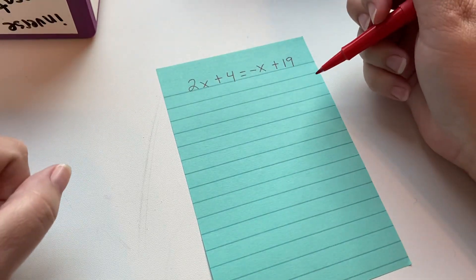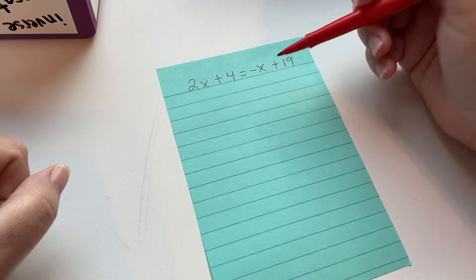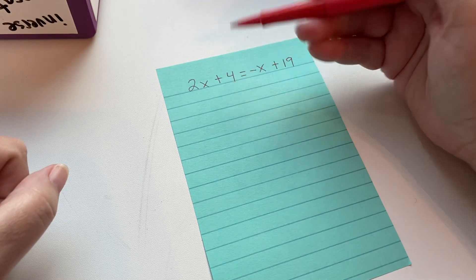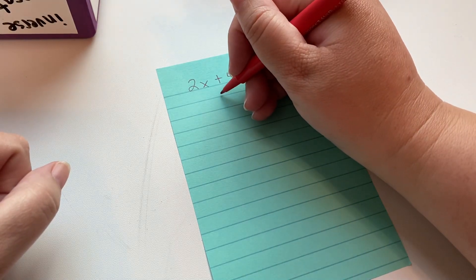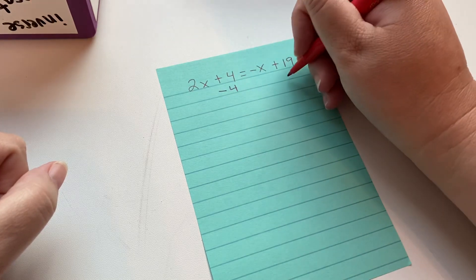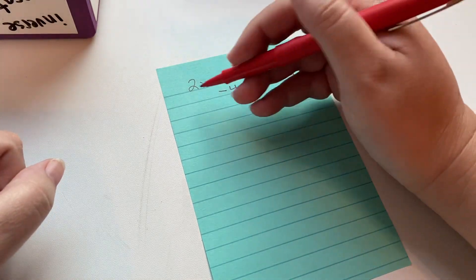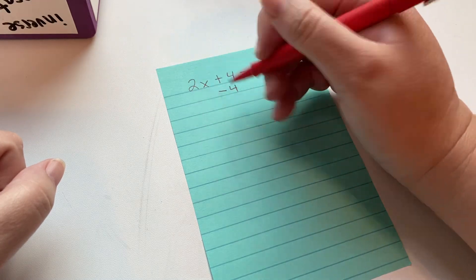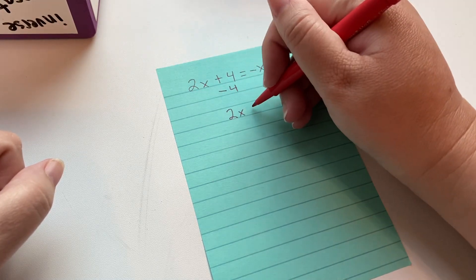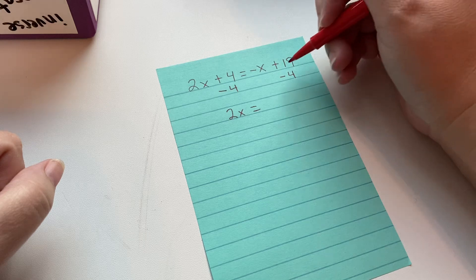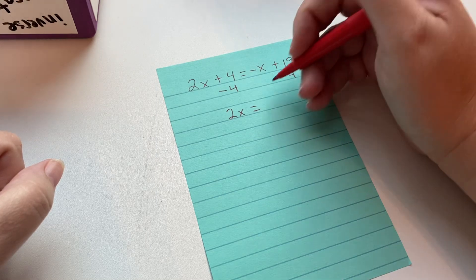So we're trying to eliminate things, and I want to eliminate this four first. So I'm going to subtract four from both sides. As long as I do it on both sides, it stays balanced. So this becomes zero. I'm left with 2x on this side of our new equation. And then here, 19 minus four is 15.